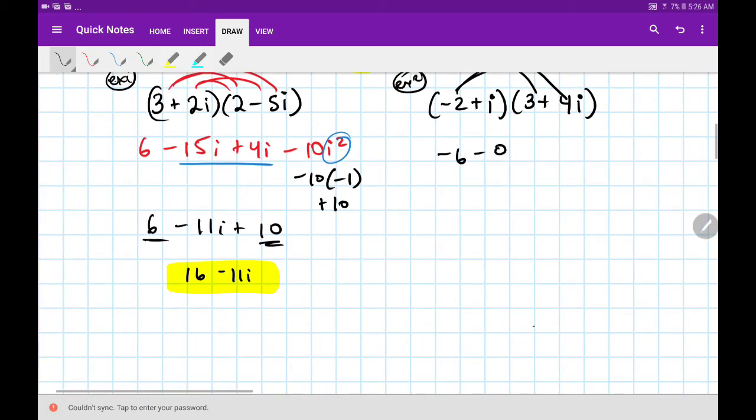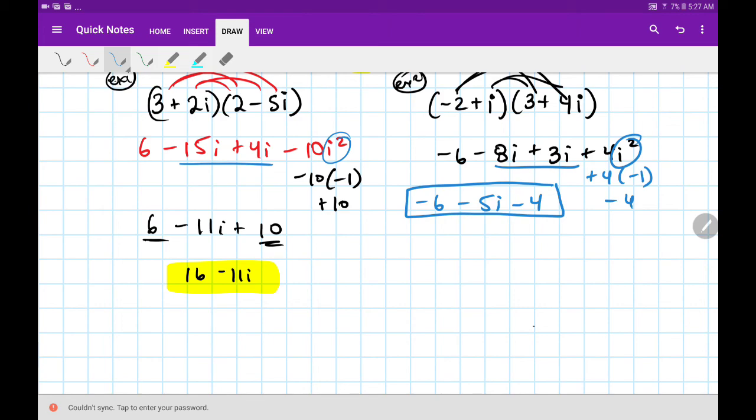And then minus three I, plus three I, plus four I squared. Two things we can do right now. Combine like terms, and replace our I squared. So it's going to give me negative six, and then minus eight I plus three I is minus five I. And then this would have become plus four times negative one, which really flips that sign, which is minus four. So this is the expression that I should be with. Now let's just combine our constants. Negative six minus four is negative ten minus five I.